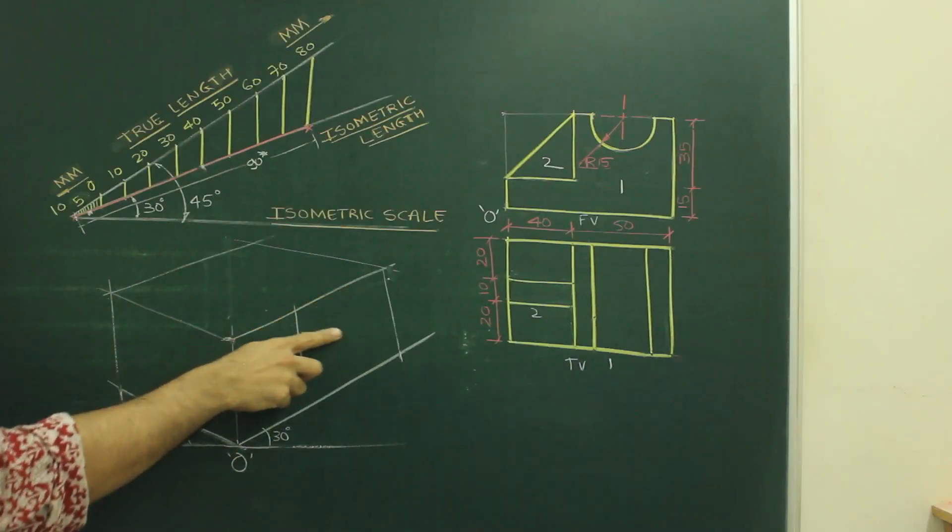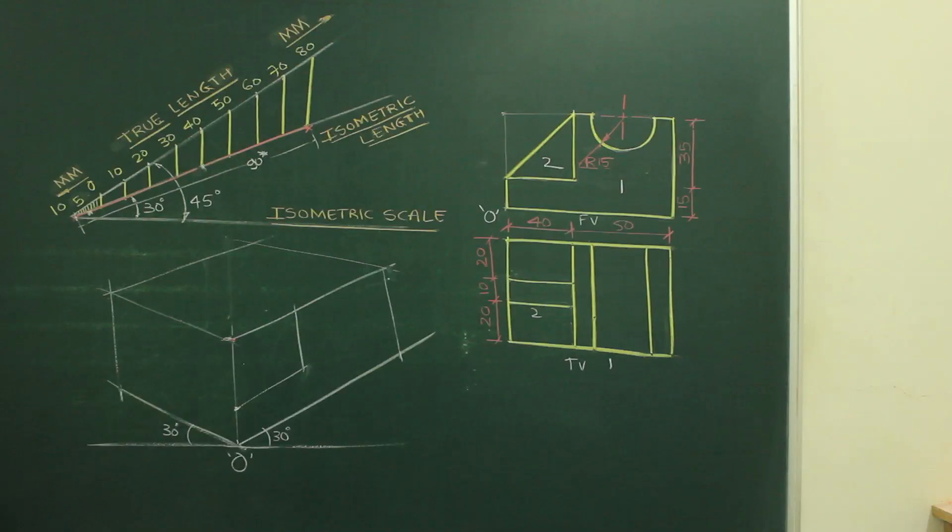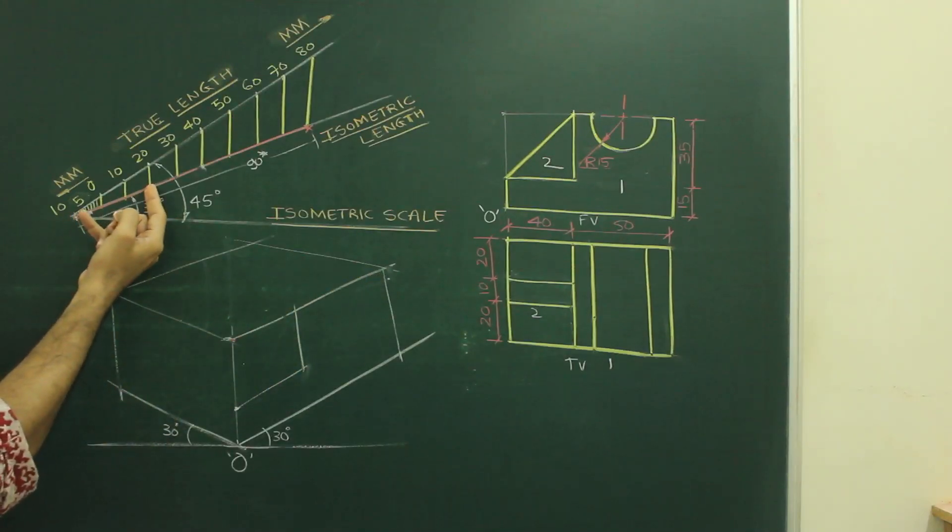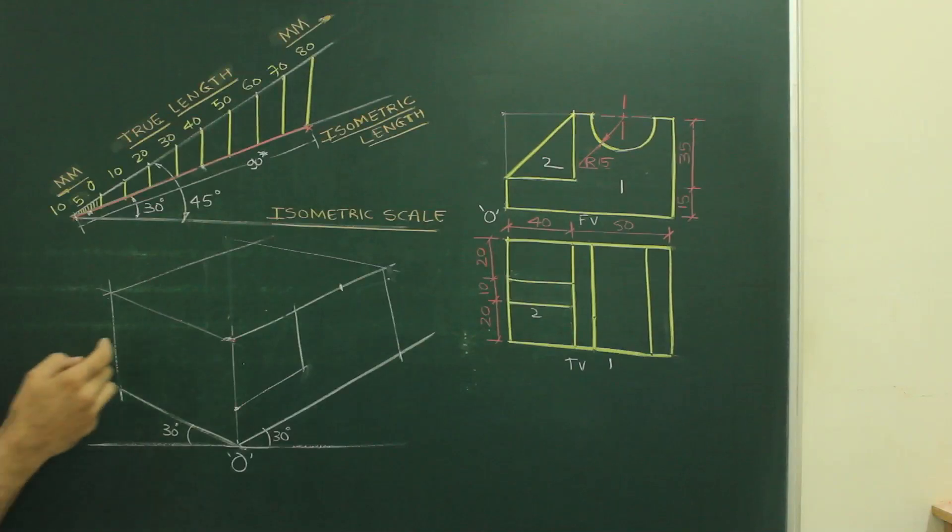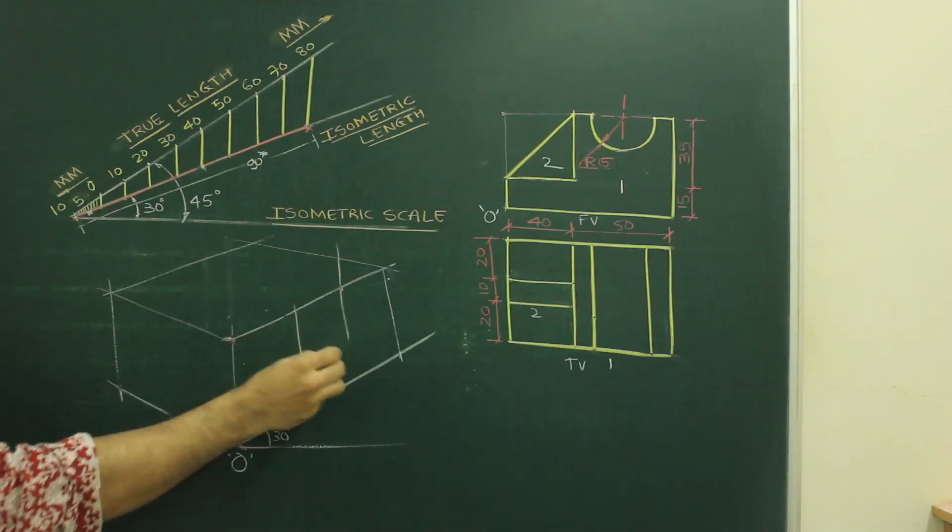Now we need to draw circle. So radius for that circle is 15. So what I will do? First, I will find out the midpoint of this. That is 25. So I will take 20 from here, 5 from here. And I will cut midpoint of the side. Then from there, I have to draw rhombus.